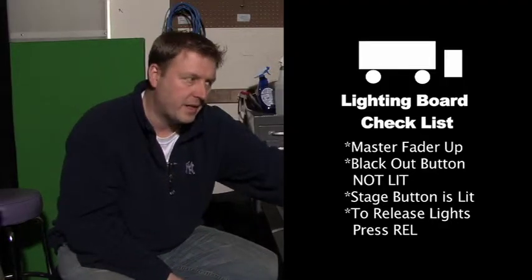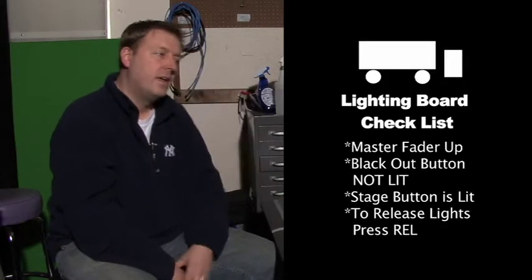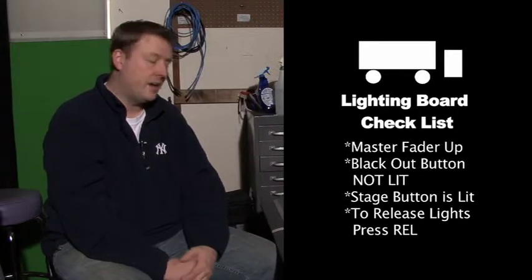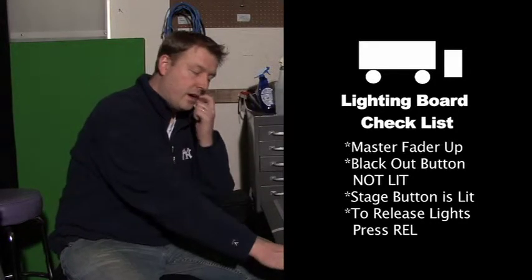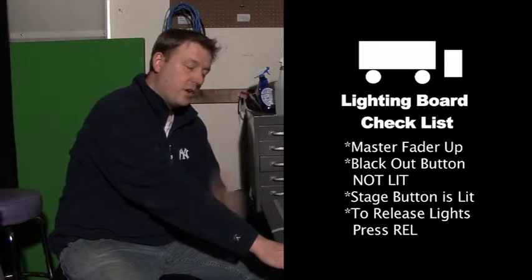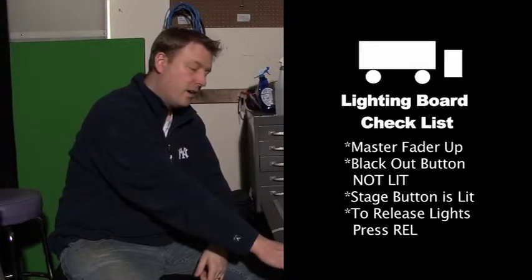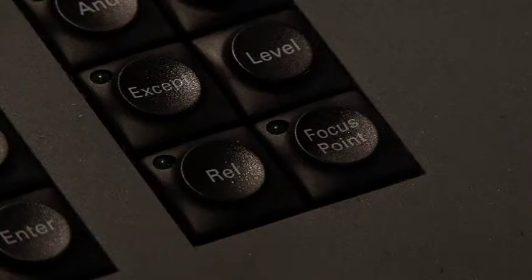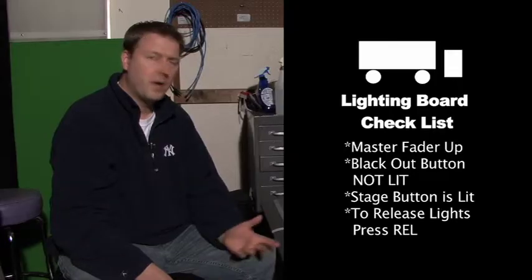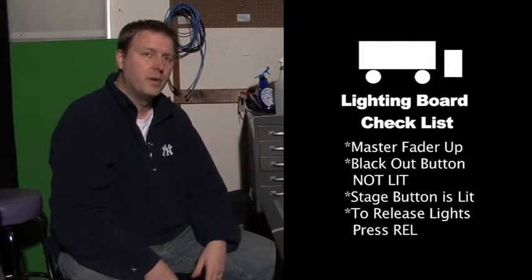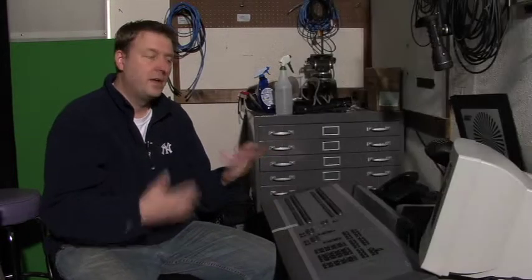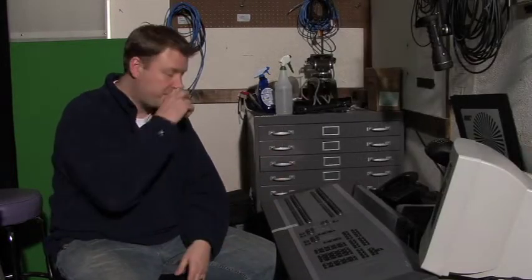If there's anything on your monitor that's in red and it's at a certain level, that light is on right now. To release that, you would hit release — which is R-E-L on the lighting board — and hit it twice. That will release anything that someone might have done before you, where maybe they left the light up at a certain level, and you need to clear that off.